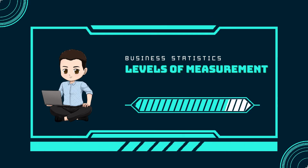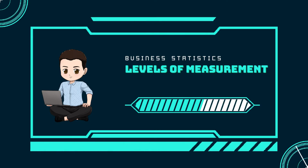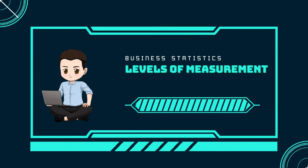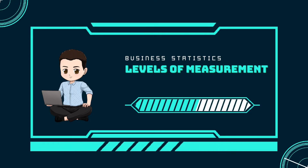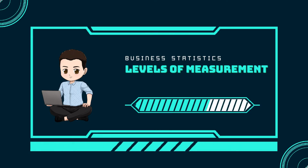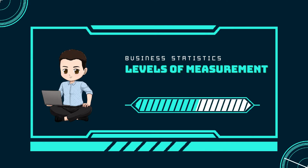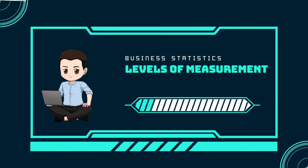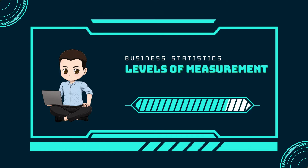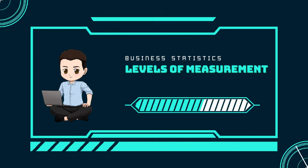Smartphone companies are another example of nominal scale data. The data are the names of the companies that make smartphones, but there is no agreed upon order of these brands, even though people may have personal preferences. Nominal scale data cannot be used in calculations.